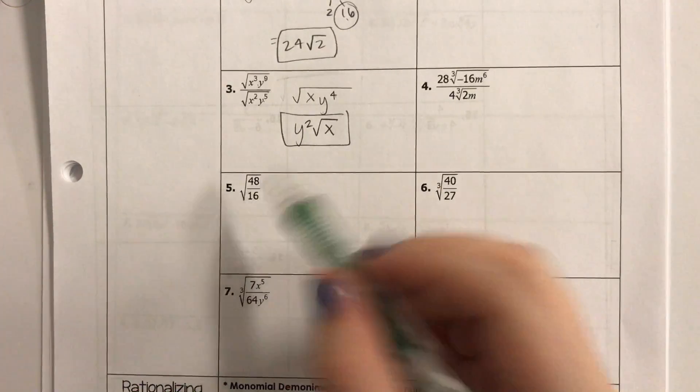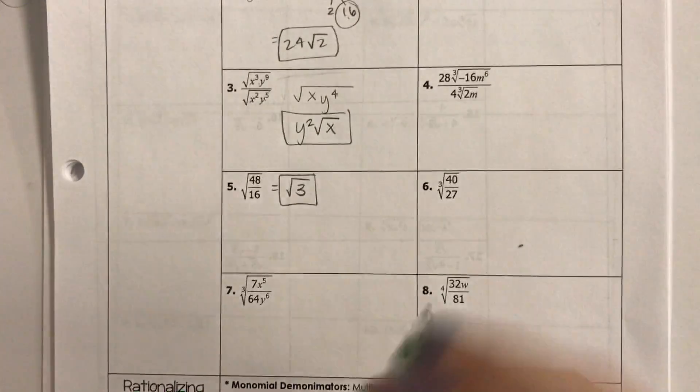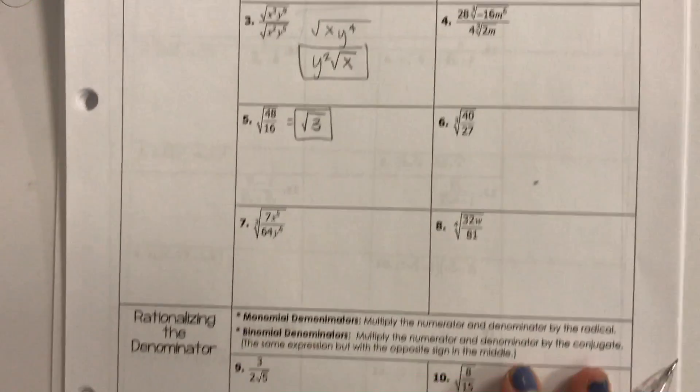48 divided by 16 is 3. And that's as far as I can get on that one. That one is pretty simple. Alright. Let's keep going.